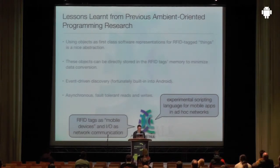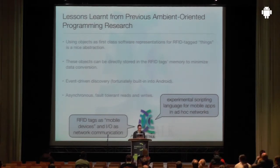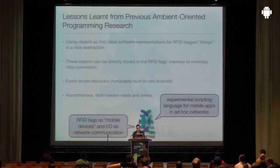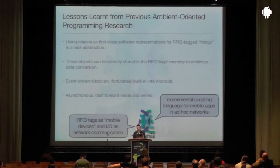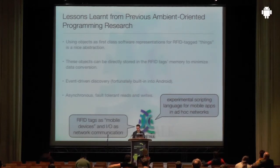Morena models data to be written on NFC tags as Java objects — high-level software representations we call 'things', because you put tags on things. Things always maintain a unique one-to-one mapping to a real physical NFC tag. They can be stored directly in tag memory with no need for manual conversion from and to NDEF messages. Morena features event-driven discovery, and ensures every operation is automatically asynchronous, non-blocking, and fault-tolerant.